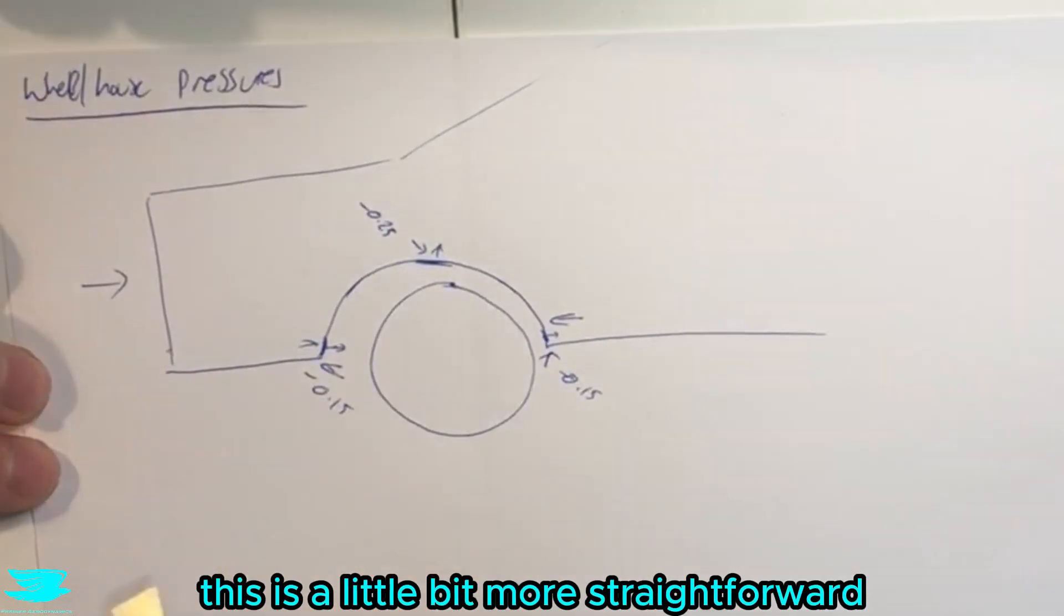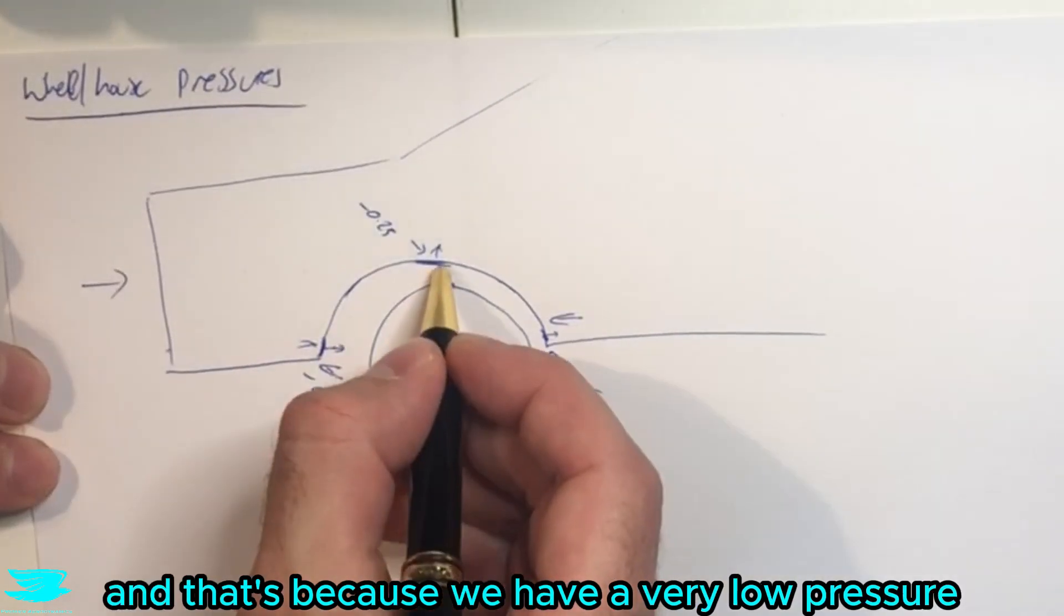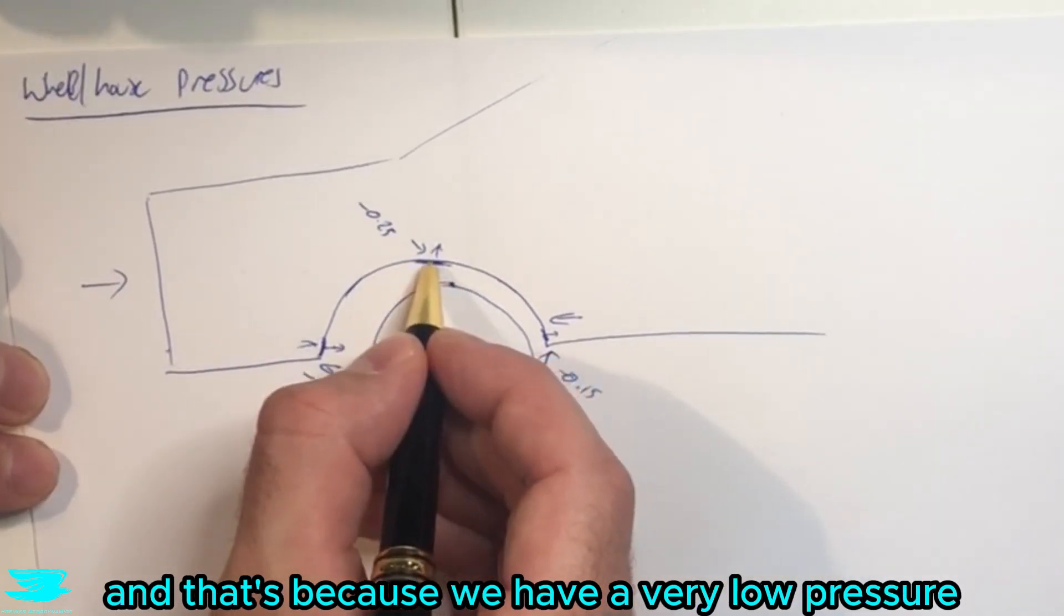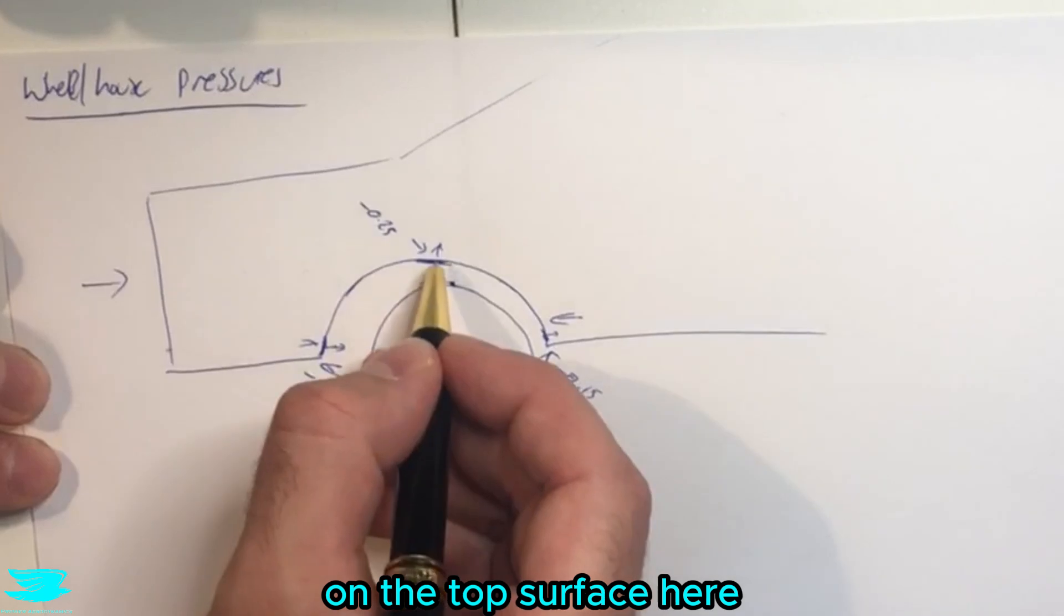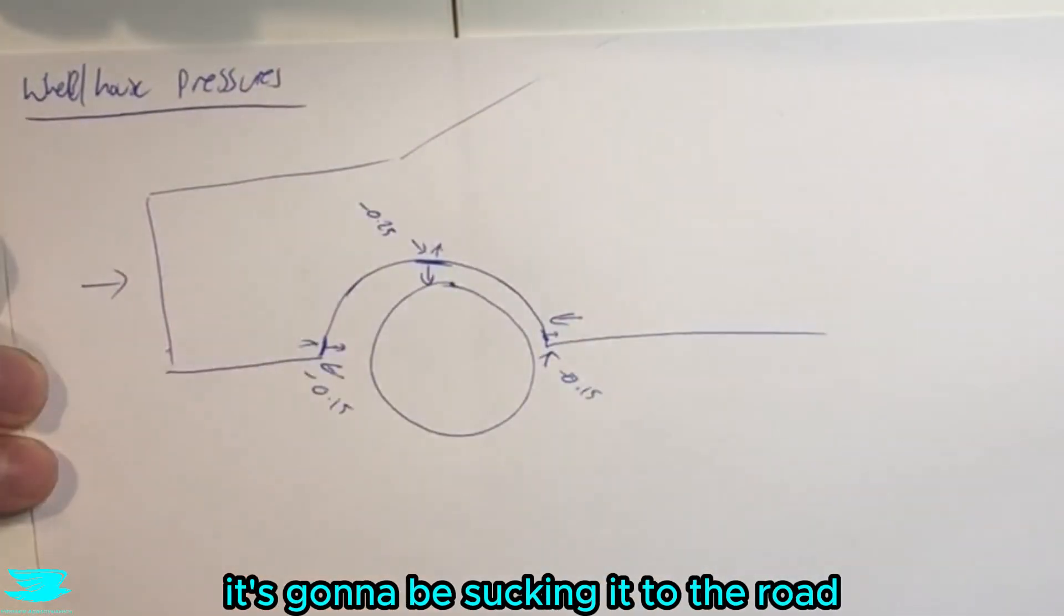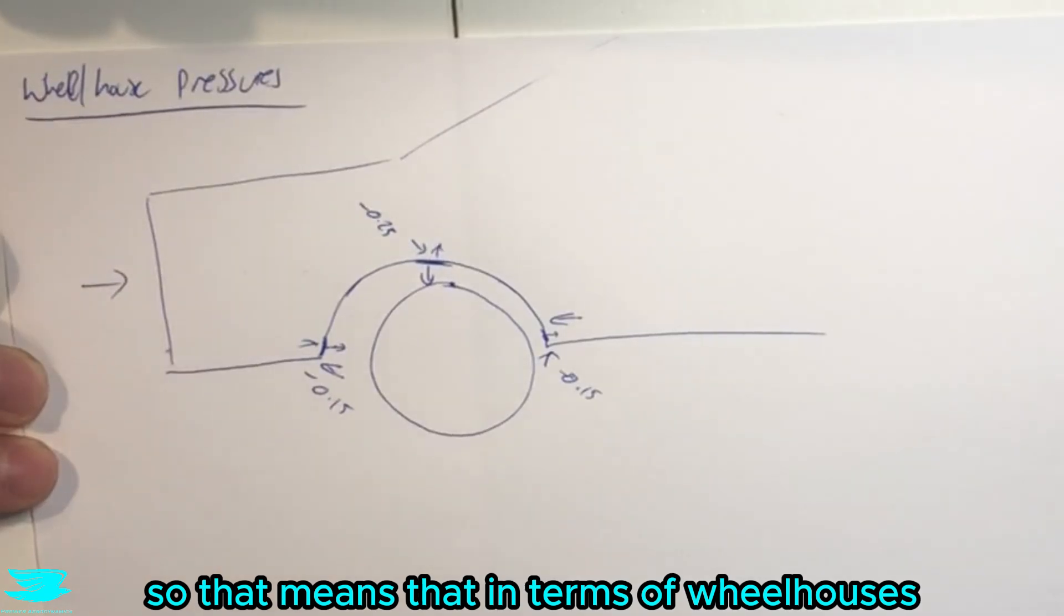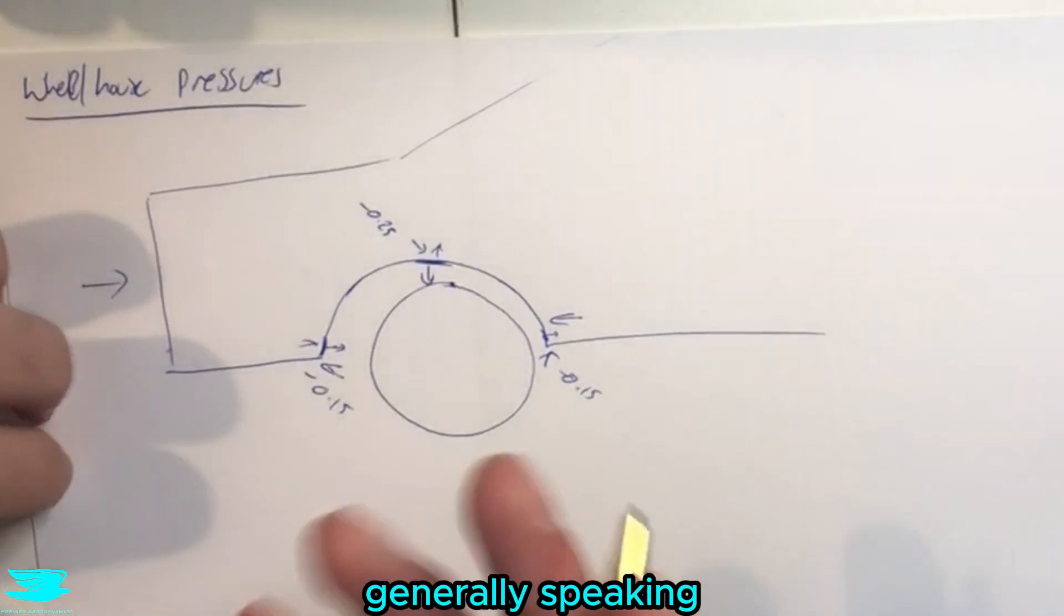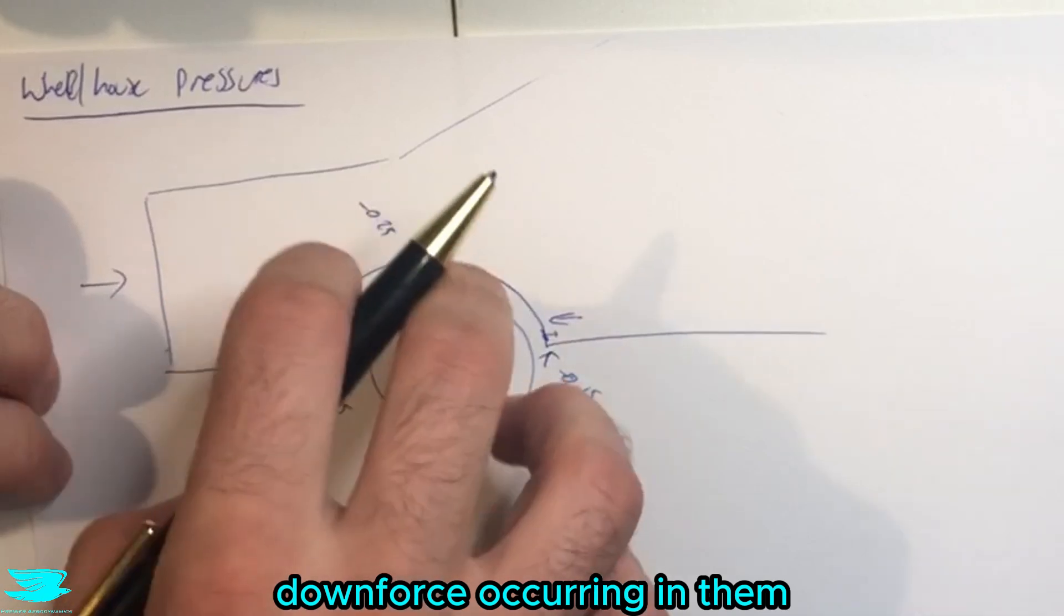In terms of the lift, this is a little bit more straightforward. That's because we have a very low pressure on the top surface here. So obviously, that is going to be pulling the car down, it's going to be sucking it to the road. So that means that in terms of wheelhouses, generally speaking, we're going to be getting downforce occurring in them.